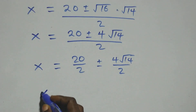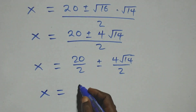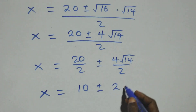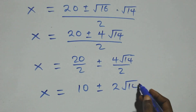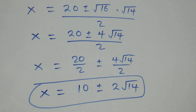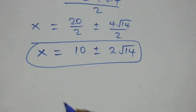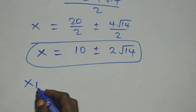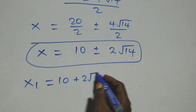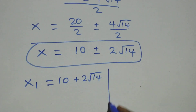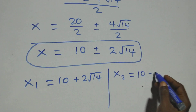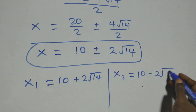We separate this into two fractions: x equals 20 over 2 plus or minus 4 root 14 over 2. That gives x equals 10 plus or minus 2 root 14. So the first solution is x1 equals 10 plus 2 root 14, and the second is x2 equals 10 minus 2 root 14.